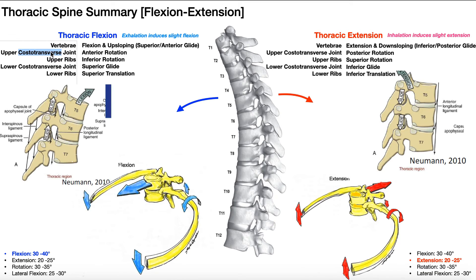The upper ribs, which are generally considered ribs one through six, those costotransverse joints are going to allow more rotational movements. When we get below the sixth rib, those costotransverse joints do not do rotation — they're going to do more gliding, translating movements. So that's why you see this discrepancy with upper costotransverse joints being rotation and the lower ones being gliding or translation.